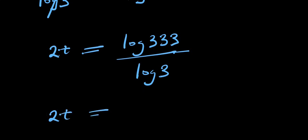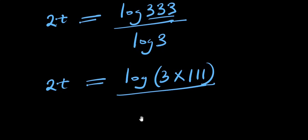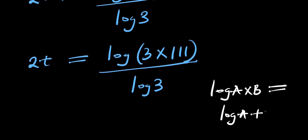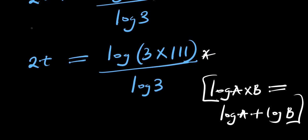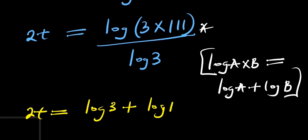Now, log(333) / log(3) means we have 333 = 3 × 111. We apply the identity log(a × b) = log(a) + log(b), so log(333) = log(3) + log(111), divided by log(3).